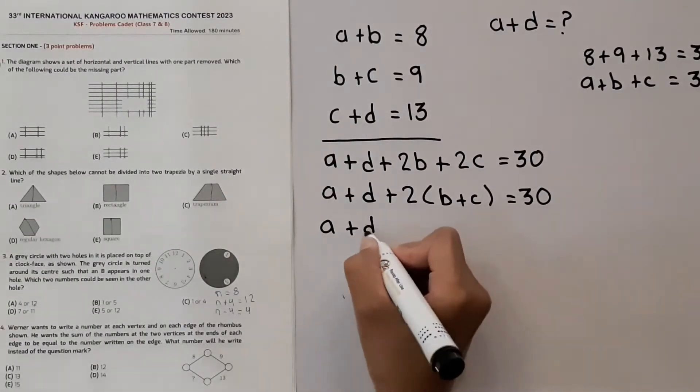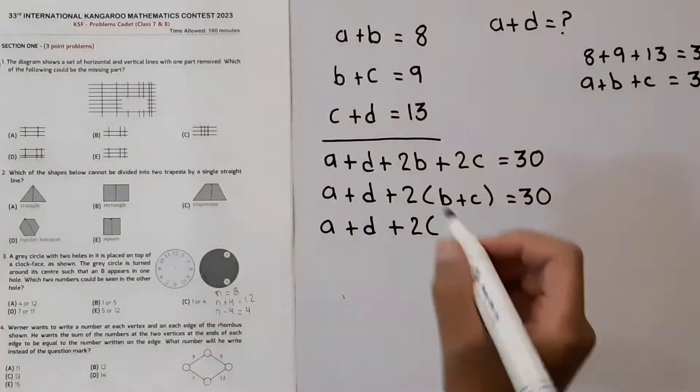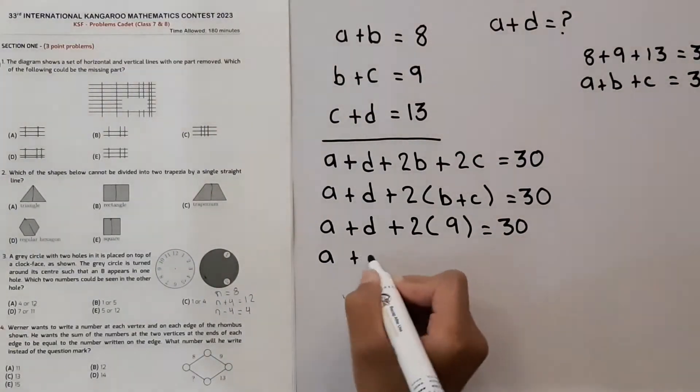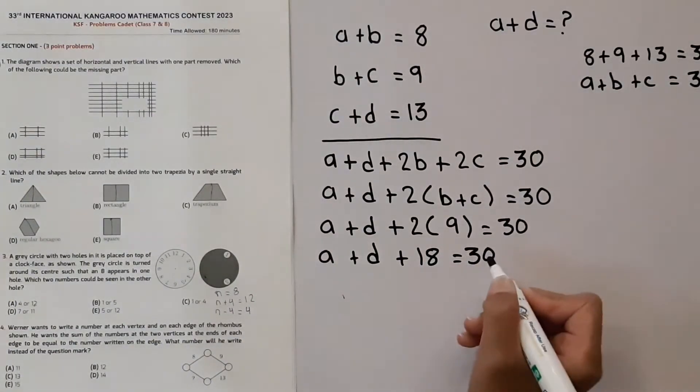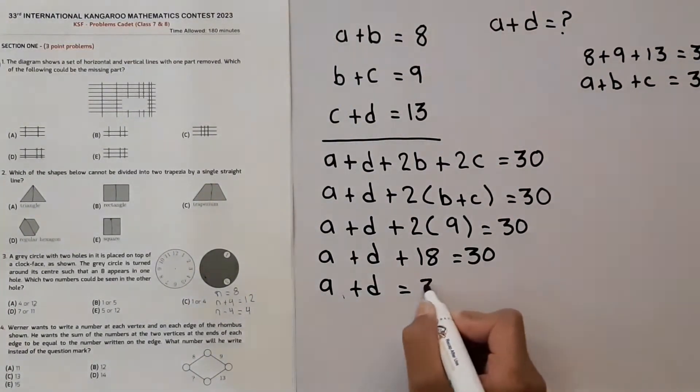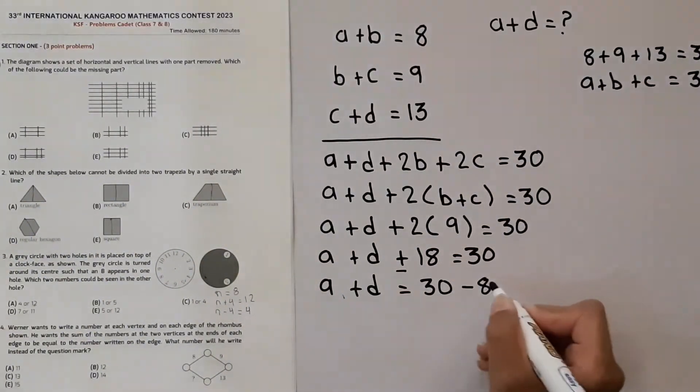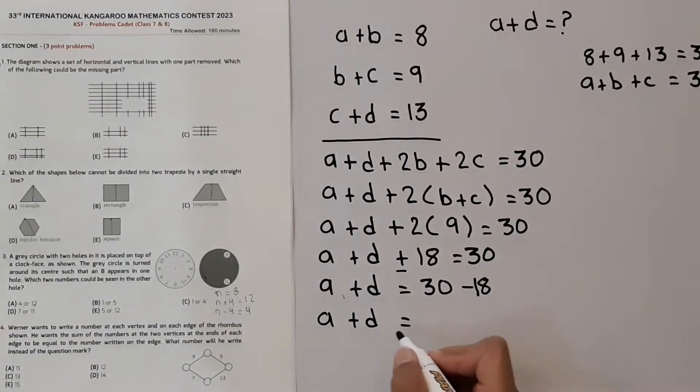Now the value of B plus C is 9. So 9 will come here. A plus D plus 2 times 9, that's 18, is equal to 30. A plus D is equal to, it will go on the other side of the equal and the sign will change. 30 minus 18, so A plus D is equal to 30 minus 18 is equal to 12.